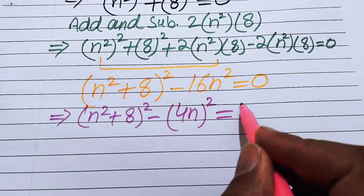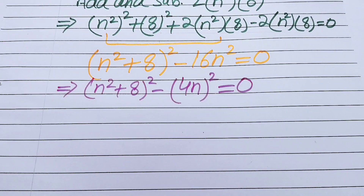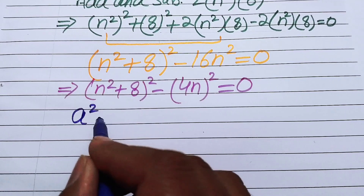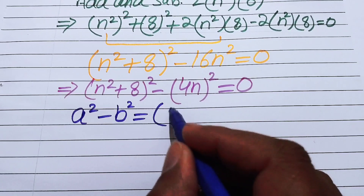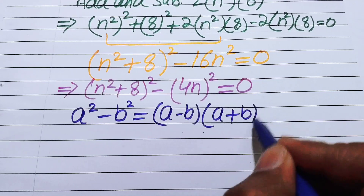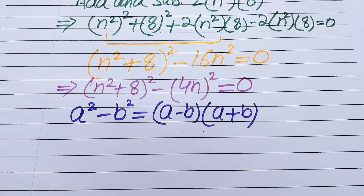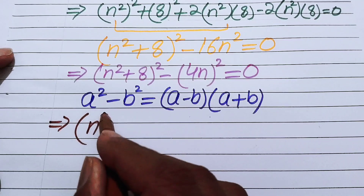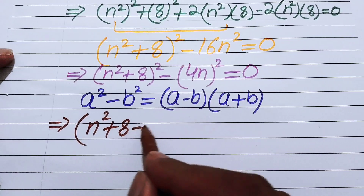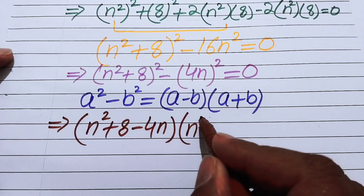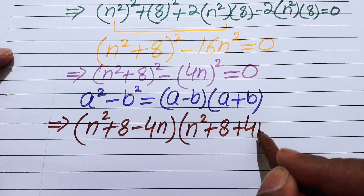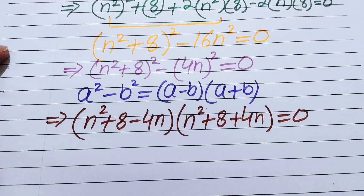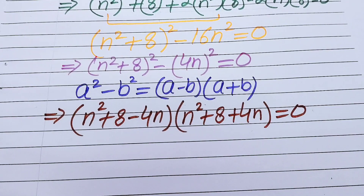Now we use the well-known difference of squares identity: a² − b² = (a − b)(a + b). Recognizing 16n² as (4n)², our expression becomes (n² + 8 − 4n)(n² + 8 + 4n) = 0. We now solve these two factors separately.